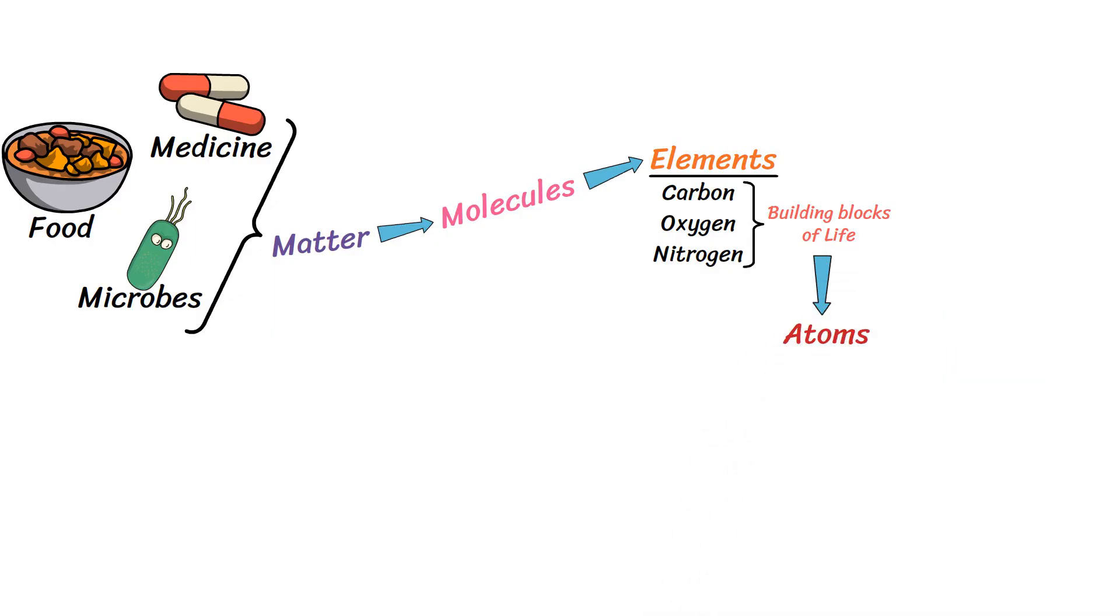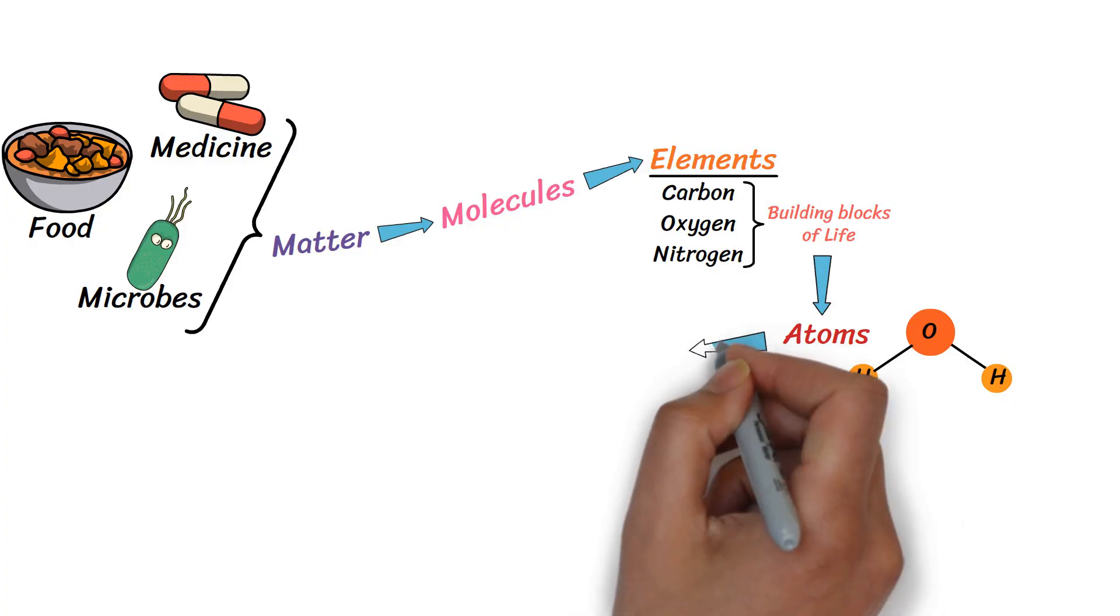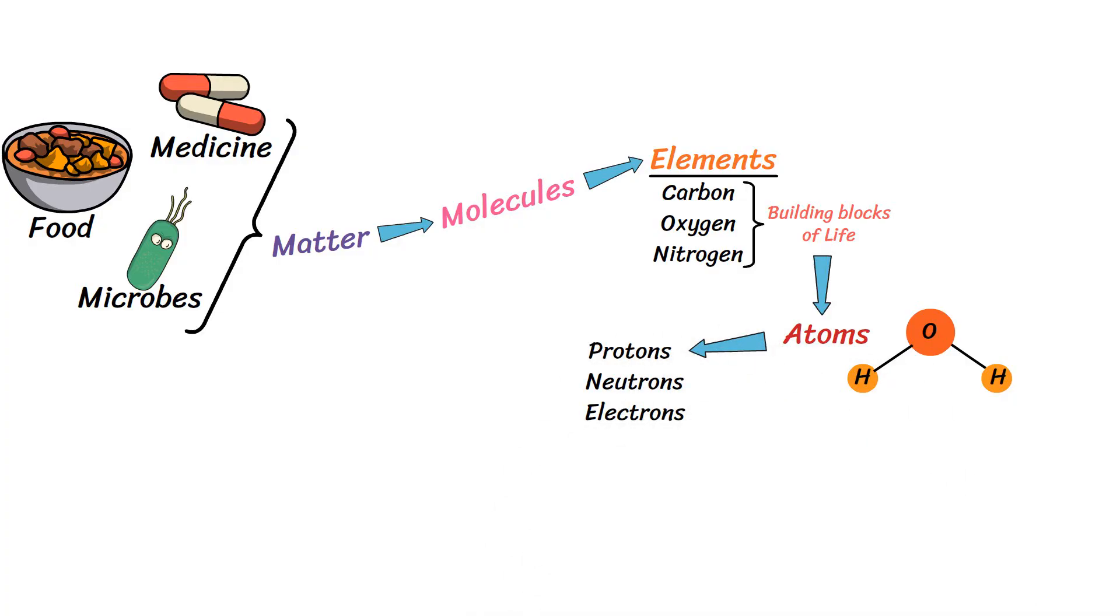Let's take water as an example. Water is made of several molecules, and each molecule is a combination of two hydrogen atoms and one oxygen atom. If we go even deeper, except for hydrogen atom, all atoms are made up of protons, neutrons, and electrons. The hydrogen atom consists of one proton and one electron.